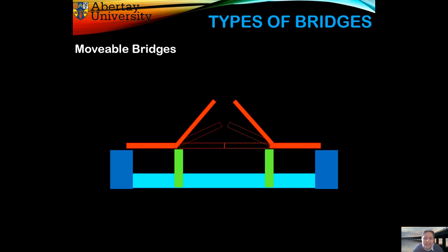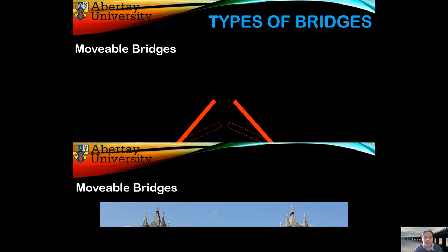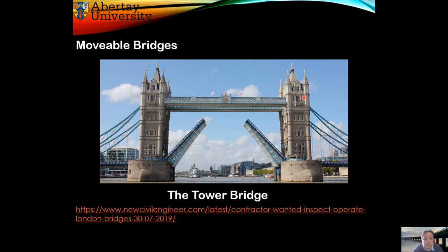A modification to normal girder bridges is the movable bridge. It would be a normal girder bridge; however, it can open the middle section to allow ships to pass underneath. One very famous example is Tower Bridge in London.